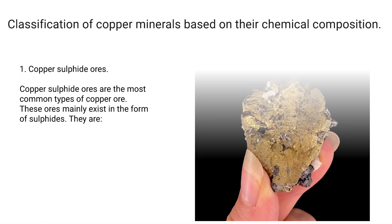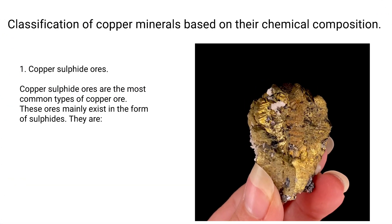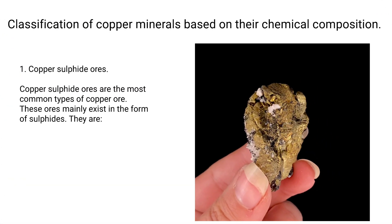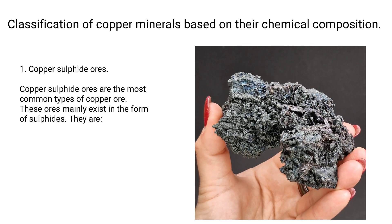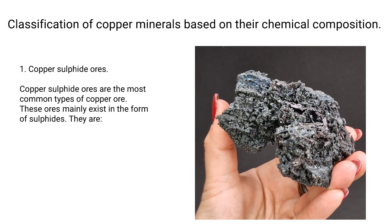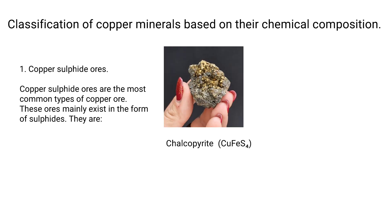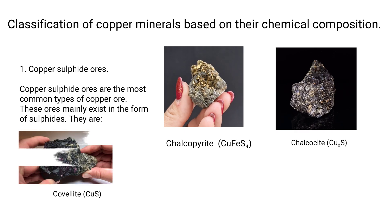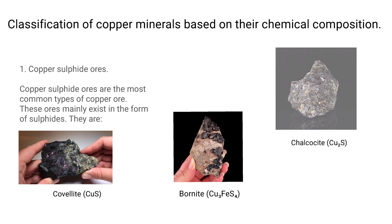1. Copper Sulfide Ores: Copper sulfide ores are the most common type of copper ore. These ores mainly exist in the form of sulfides. They include chalcopyrite, chalcosite, covellite, bornite, etc.